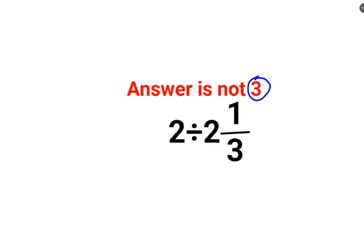So here what people think: this 2 divided by 2 is 1, divided by 1 by 3, then the answer is just 3. No, that's not how these things are supposed to be done.